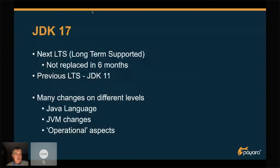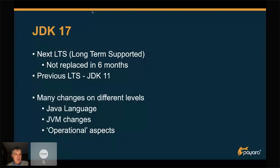JDK17 is the next LTS (long-term supported) version, so it's not replaced in six months. Most vendors will support it for something like seven years, regularly updating the runtime for security issues and bug fixes, while the functionality stays the same. The previous LTS was JDK11, and before that JDK8. There are many changes at different levels — not only the Java language has changed, but also JVM changes and operational aspects. I'll cover all of them that are important for a Jakarta EE developer or Jakarta EE environment.